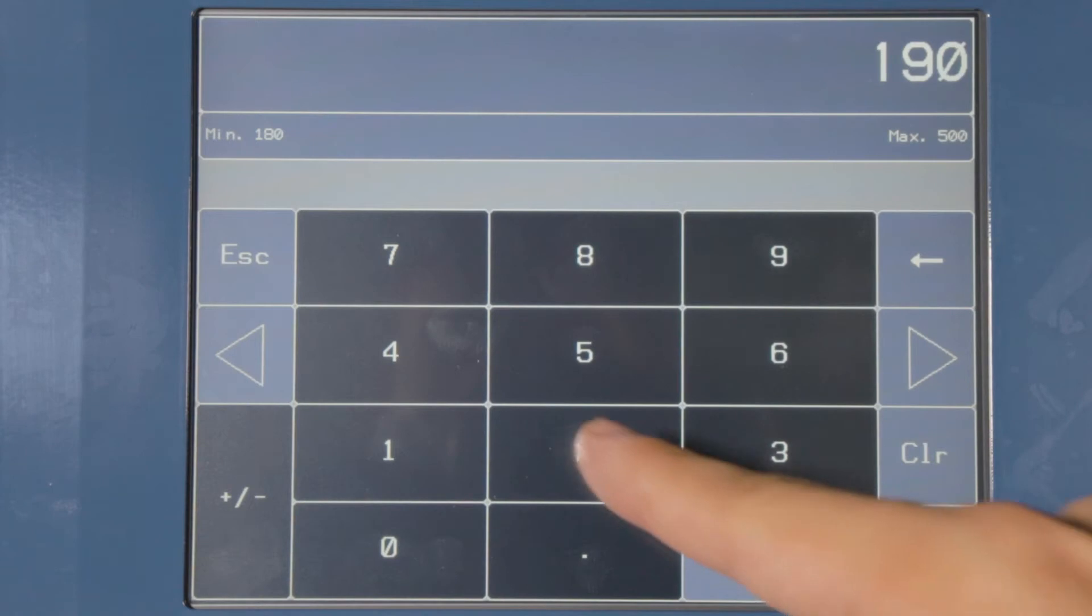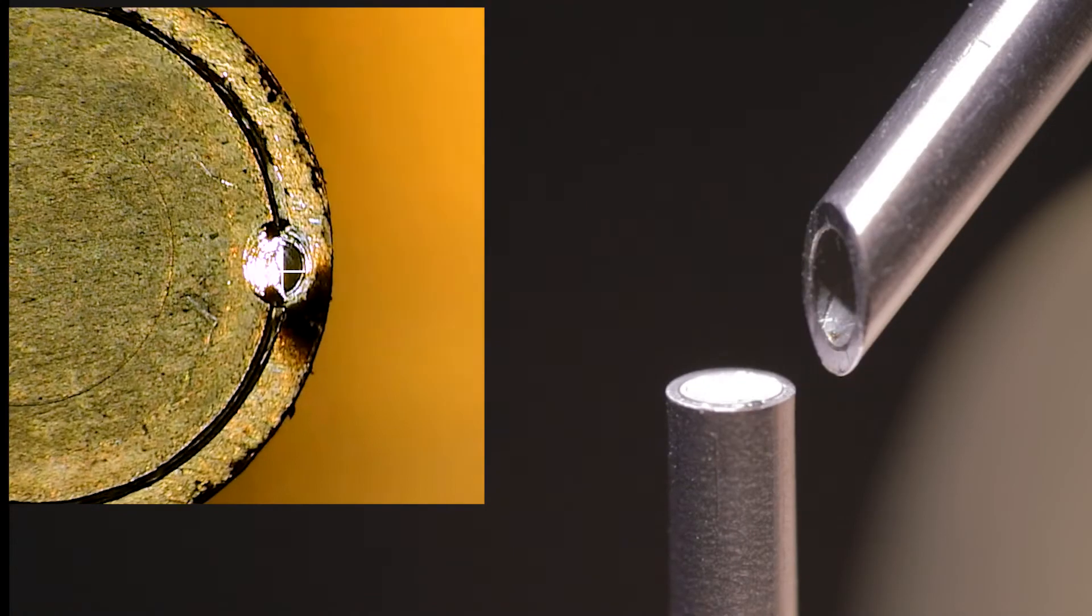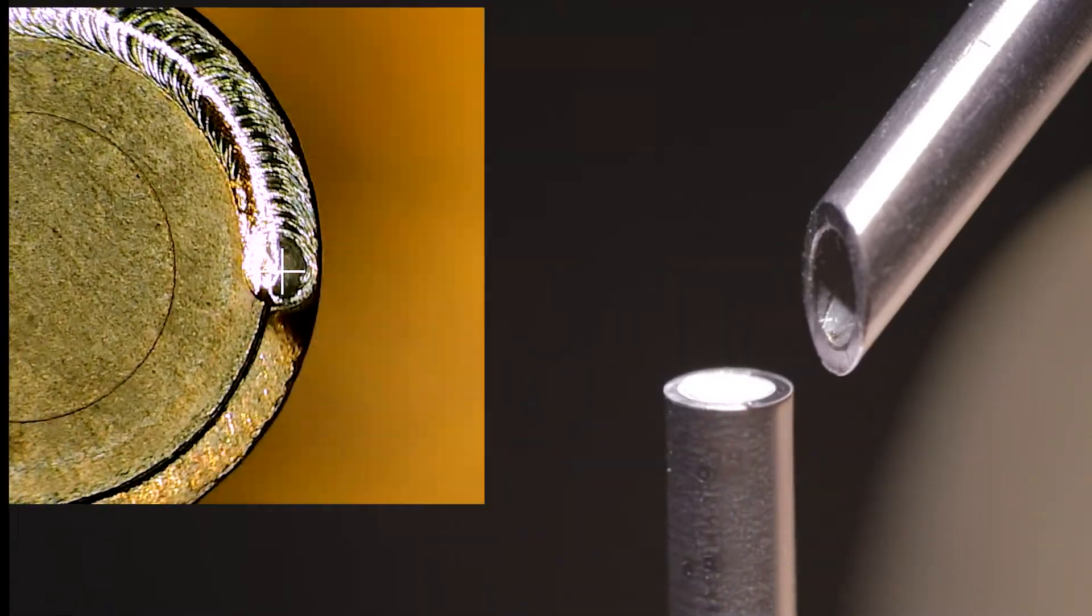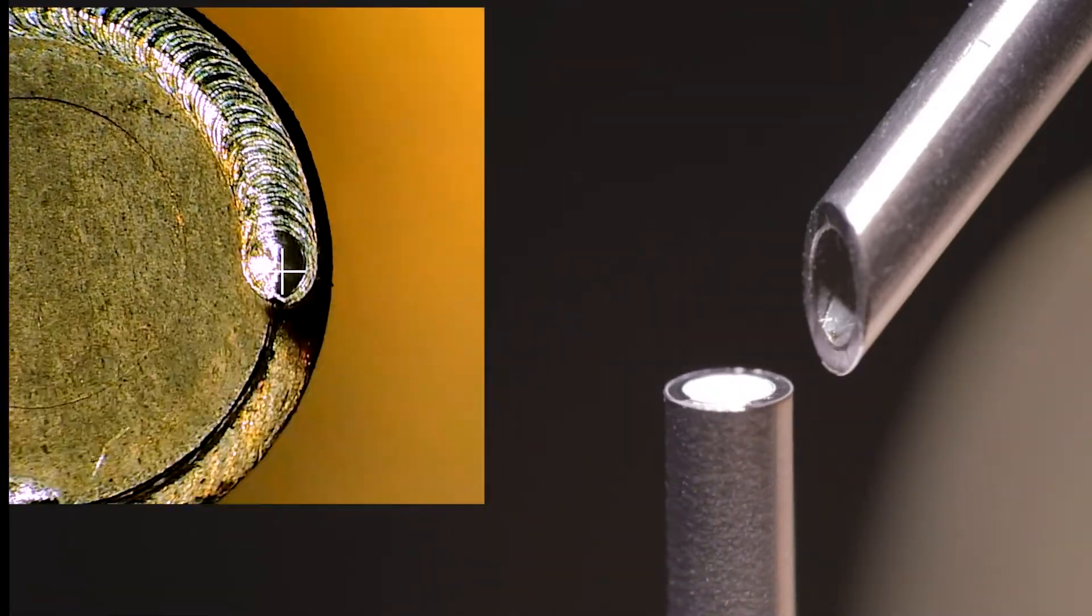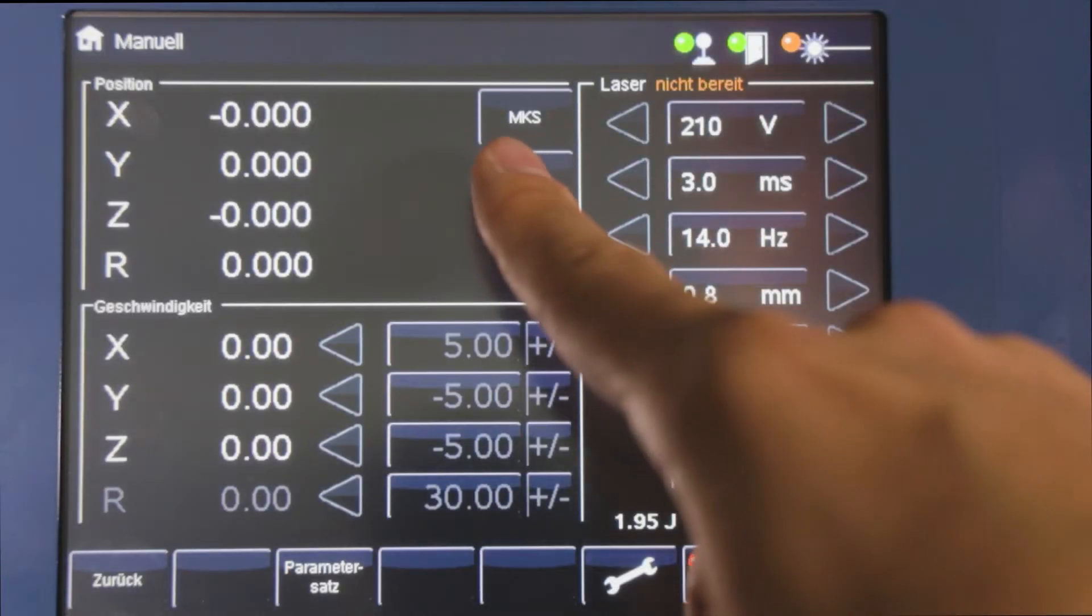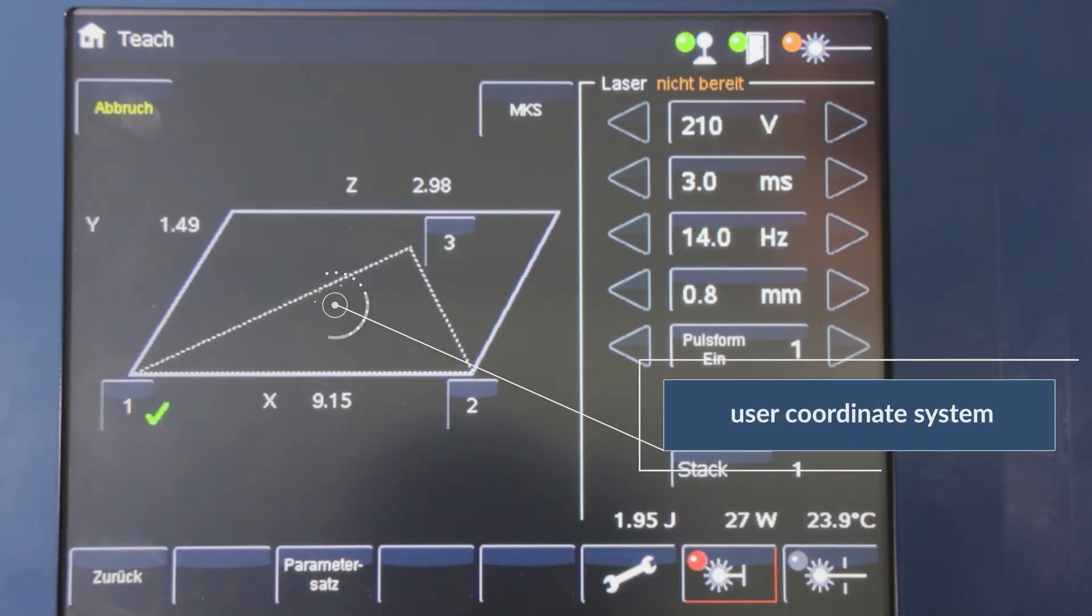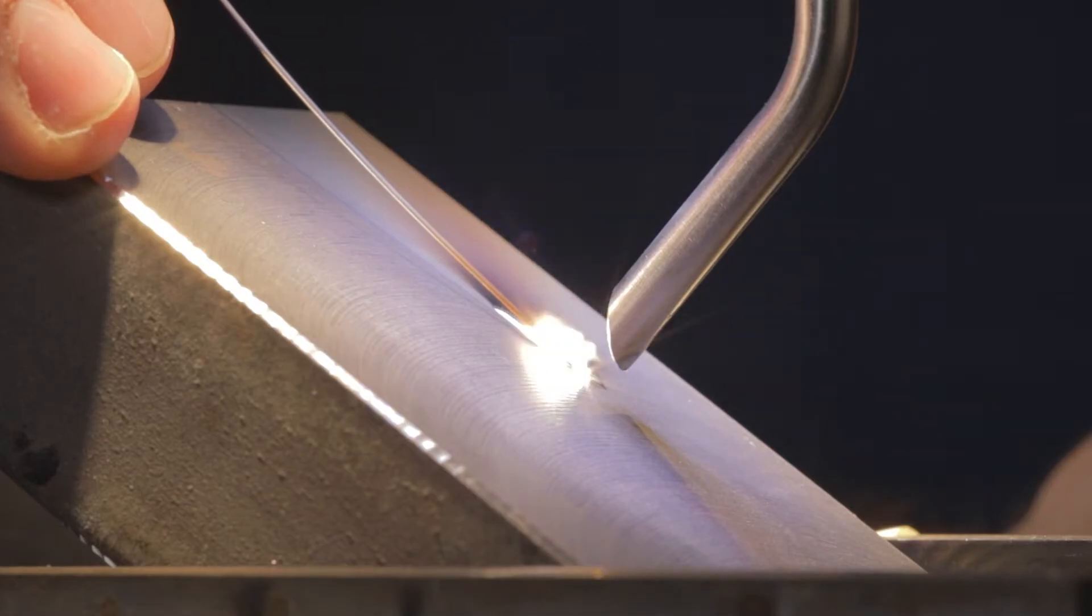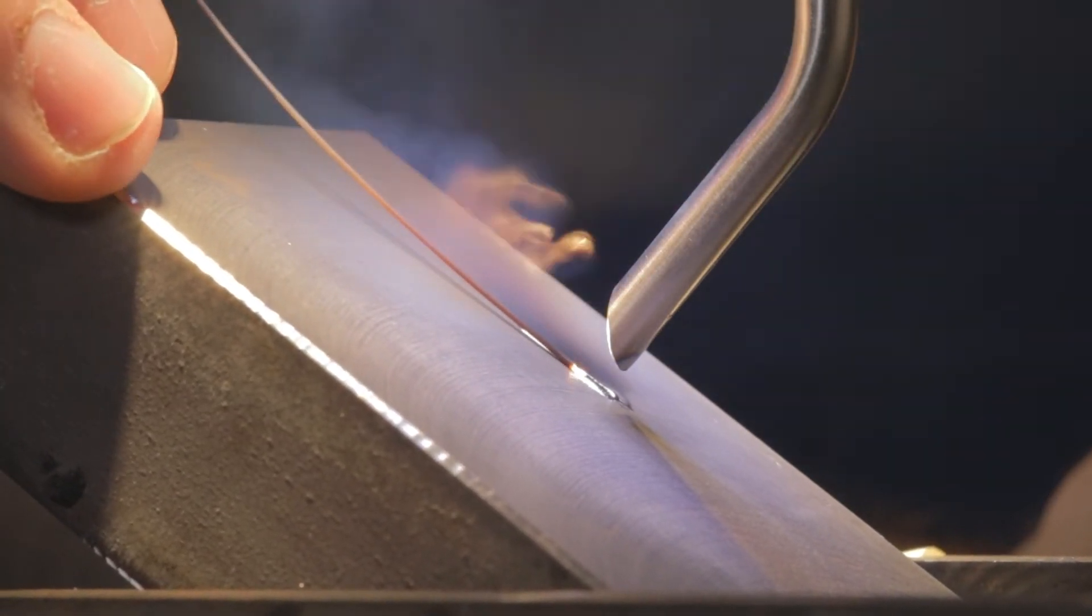The circular welding app is set and started via the touch display. The touch display also allows to teach a user coordinate system via three points. Once activated, there will be no need to refocus when welding on an inclined plane.